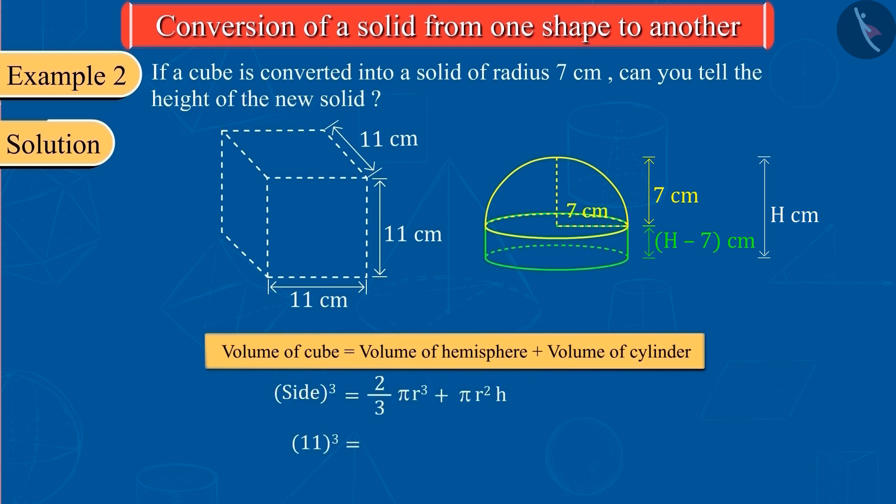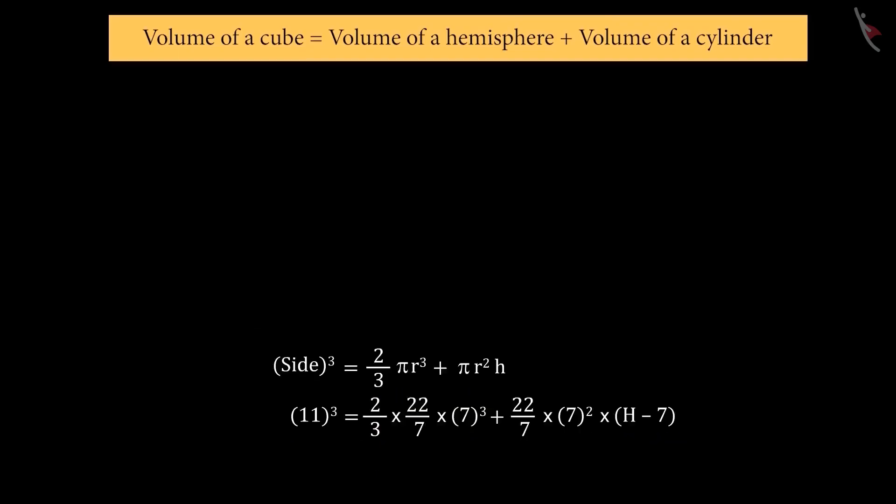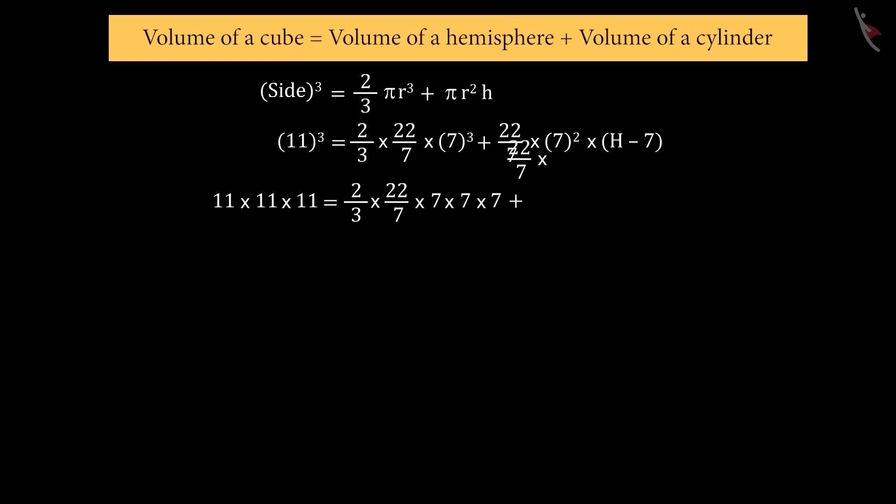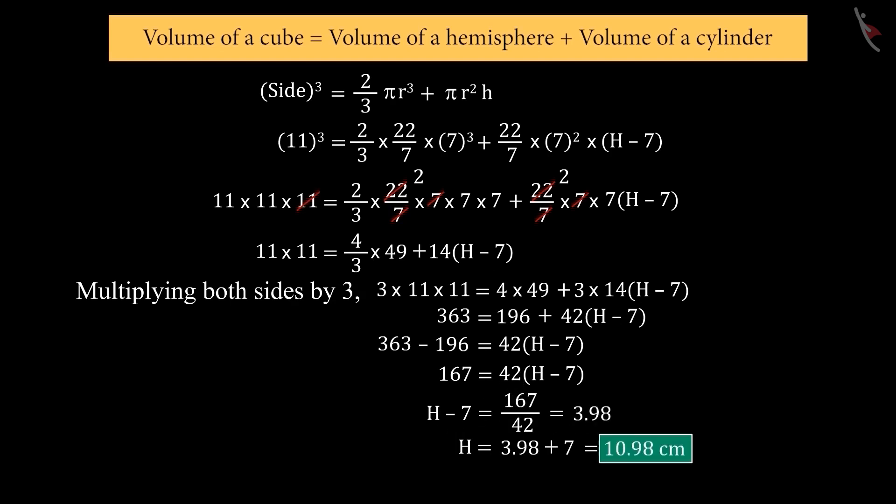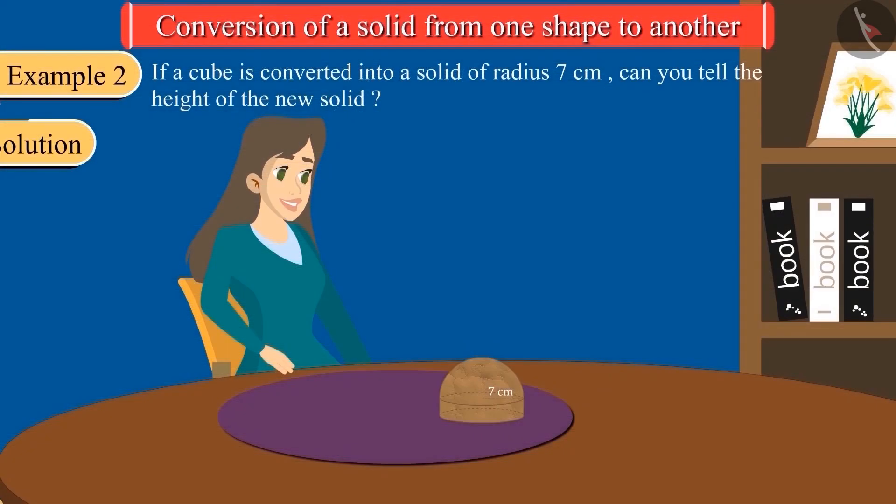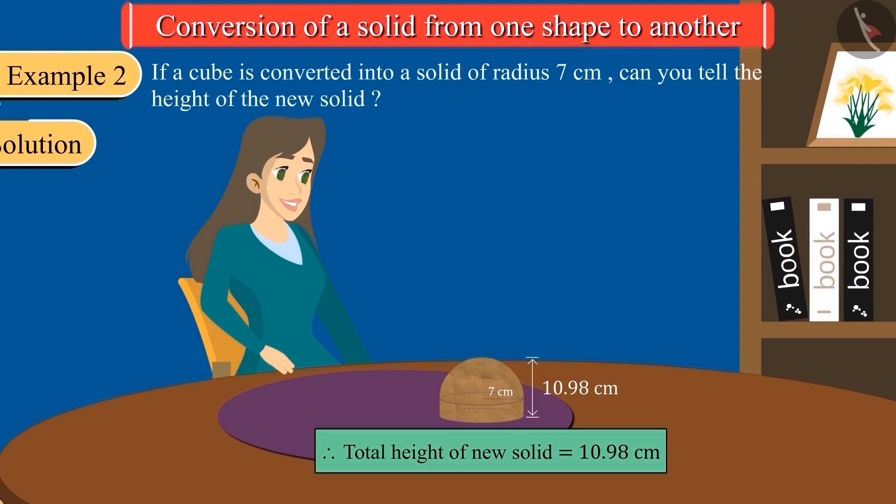On substituting all values and solving, we get H equal to 10.98. So, the total height of the new solid will be 10.98 cm.